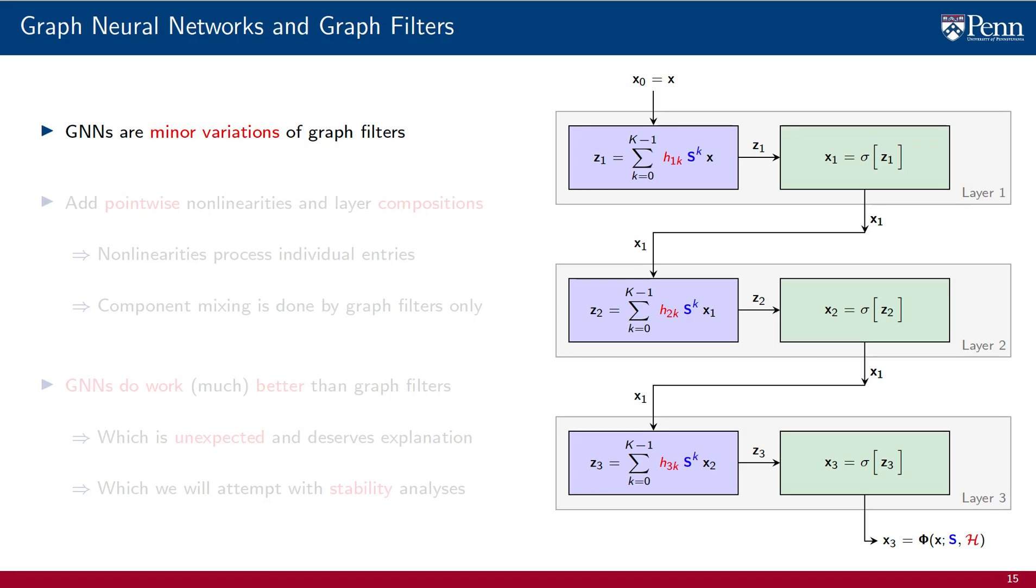A subtle point that I don't want to leave unnoticed is that GNNs are minor variations of graph filters. We have said this of perceptrons already. They are, in a sense, the easiest possible modification to transform linear graph filters into a nonlinear function class. The same is true of GNNs.